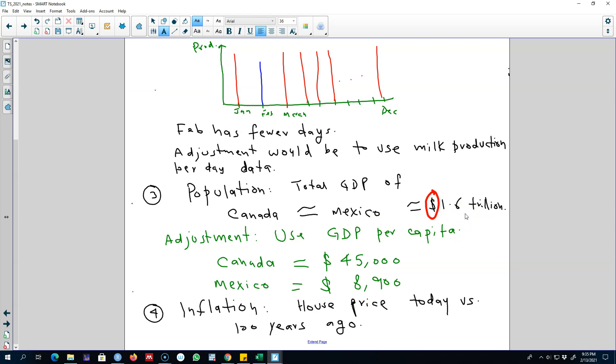After we make this adjustment and calculate GDP per capita, we get a better picture. The GDP per capita of Canada is almost five times that of the GDP per capita of Mexico, and now we have a sense of the standard of living across these two countries.